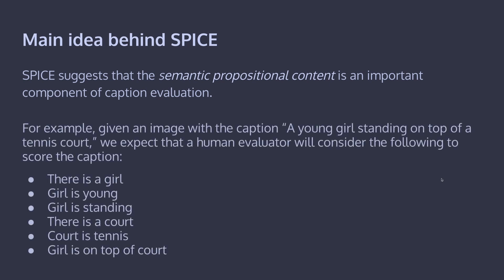The main idea behind SPICE is that semantic propositional content is an important component of caption evaluation. For example, given an image with the caption 'a young girl standing on top of a tennis court', we expect that a human evaluator will consider: there is a girl, the girl is young, the girl is standing, there is a court, the court is tennis, the girl is on top of the court. These are the criteria a human evaluator would have in mind when scoring a caption — and this is what the SPICE metric is trying to model.